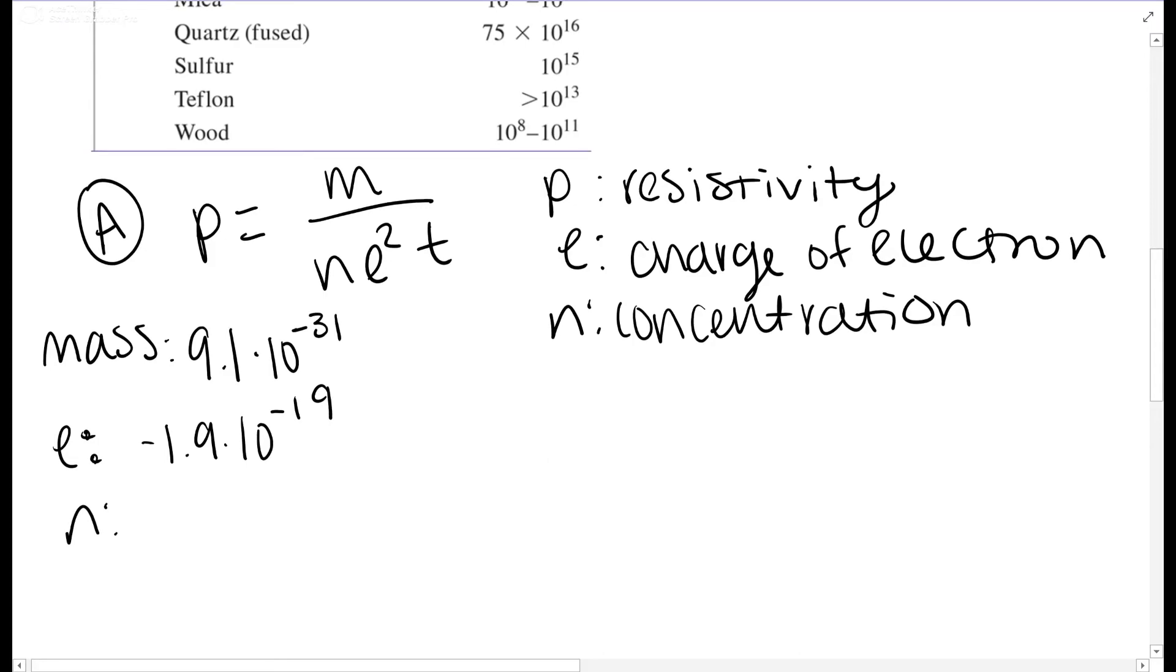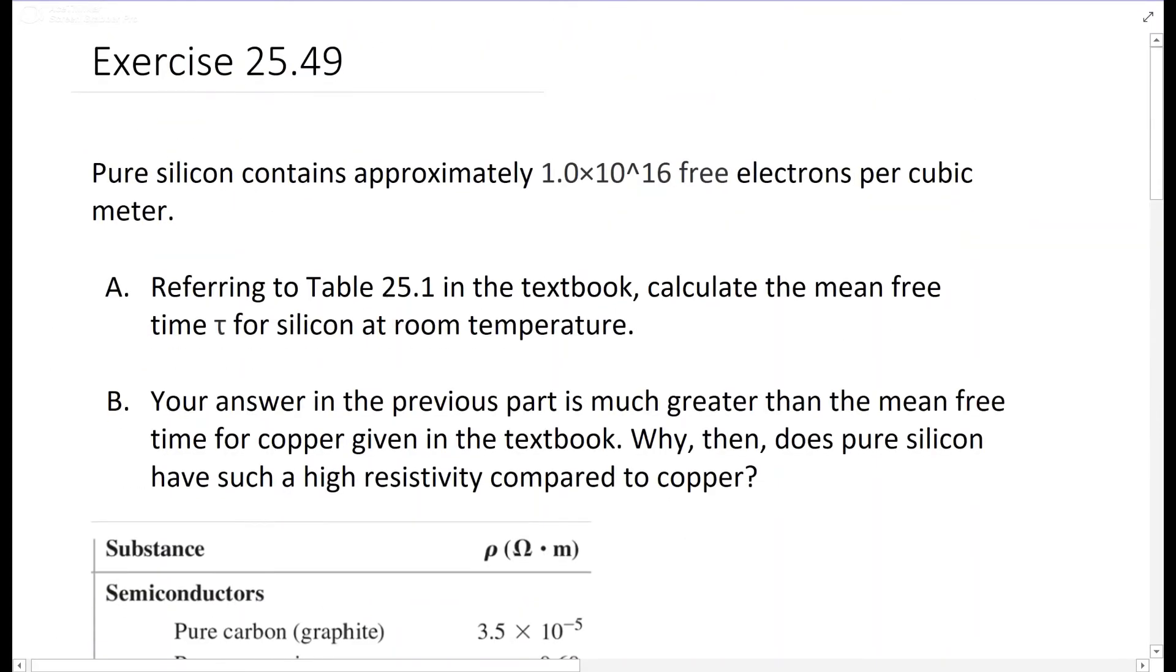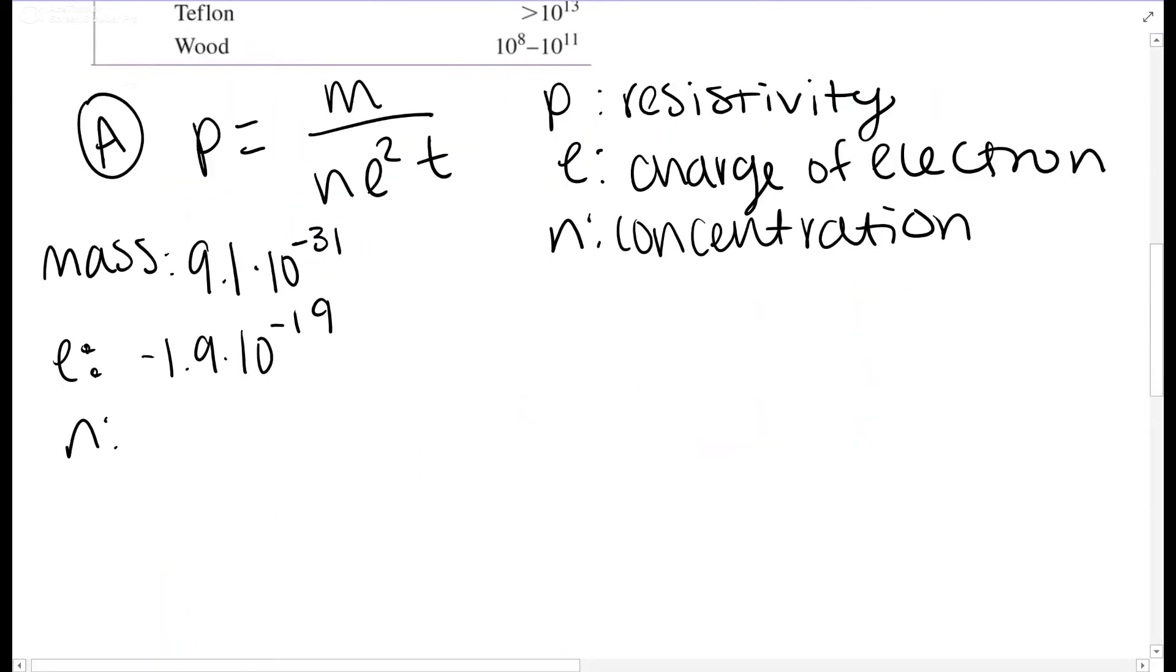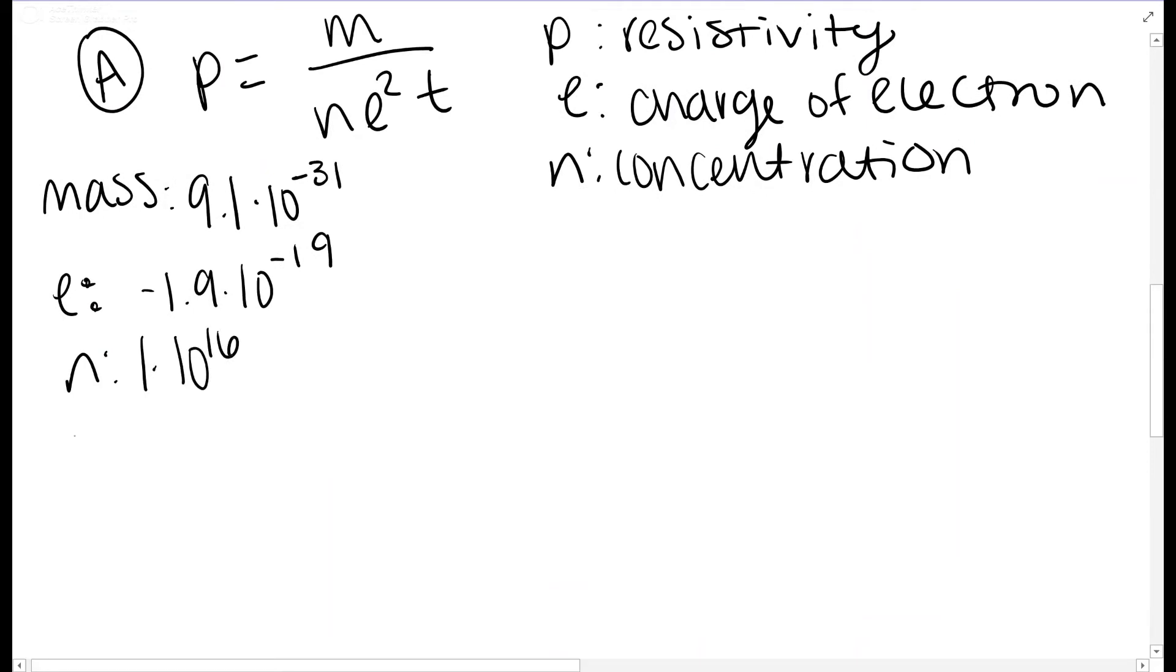n is what they give you up front: 1 times 10 to the 16th. And resistivity is what's in the table: 2300.